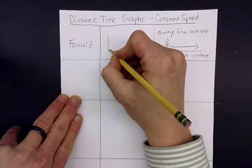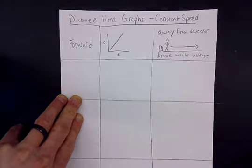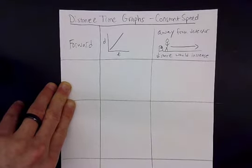Okay, so here is what it looks like on the distance time graph, and it was a straight line because it was a constant speed.